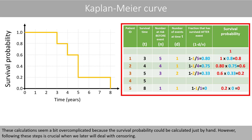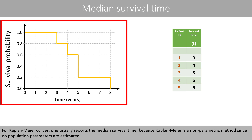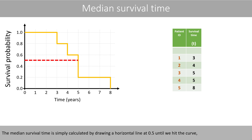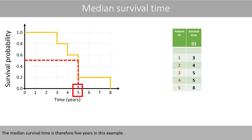These calculations seem a bit overcomplicated because the survival probability could be calculated by hand. However, following these steps is crucial when we later deal with censoring. For Kaplan-Meier curves, one usually reports the median survival time, because Kaplan-Meier is a non-parametric method since no population parameters are estimated. The median survival time is calculated by drawing a horizontal line at 0.5 until we hit the curve, and then a vertical line until we hit the time axis. The median survival time is therefore five years in this example.